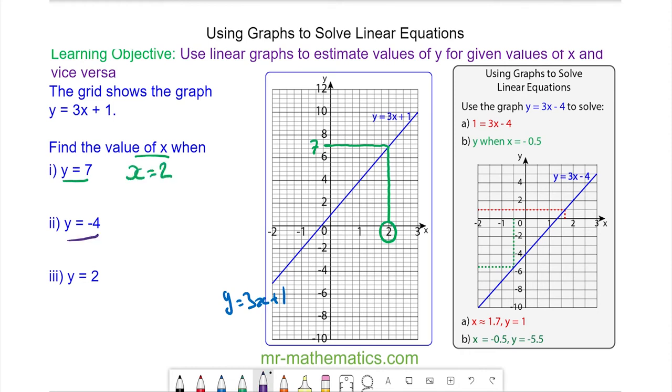When y is equal to negative 4 we draw a horizontal line at y equals negative 4 and a vertical line to the x-axis and you can see when y is equal to negative 4 x is approximately equal to negative 1.7.